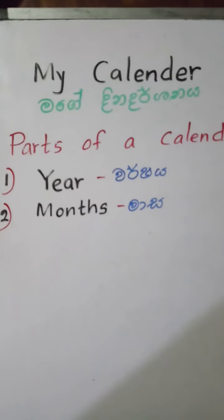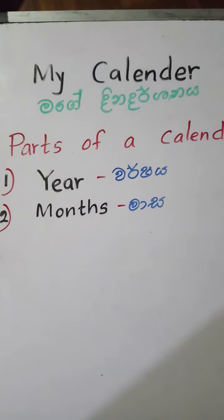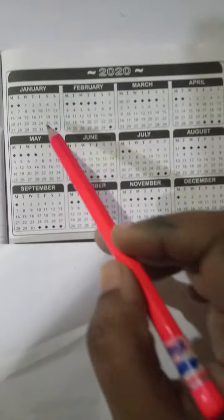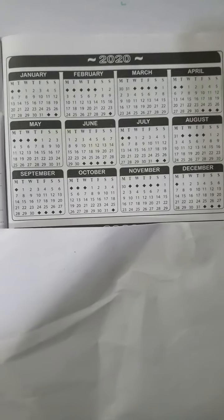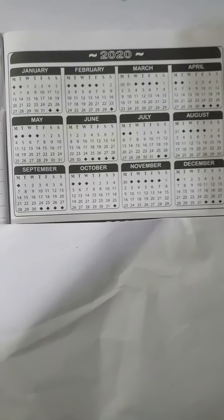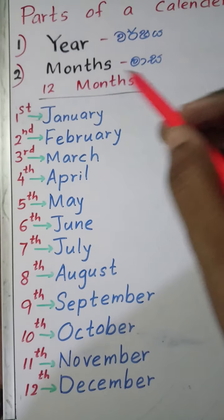Year. Months. Here are the months. There are 12 months.